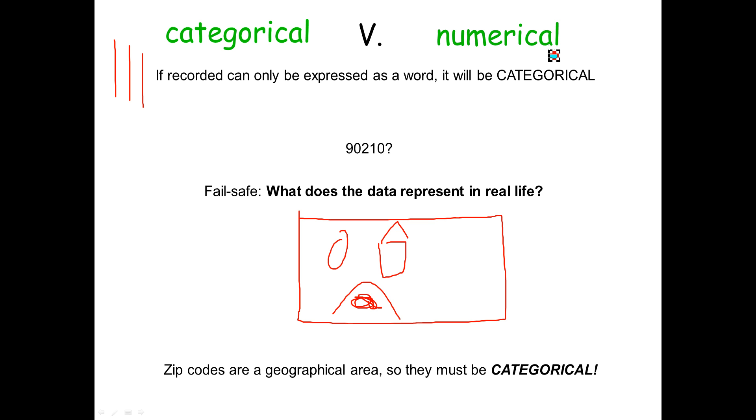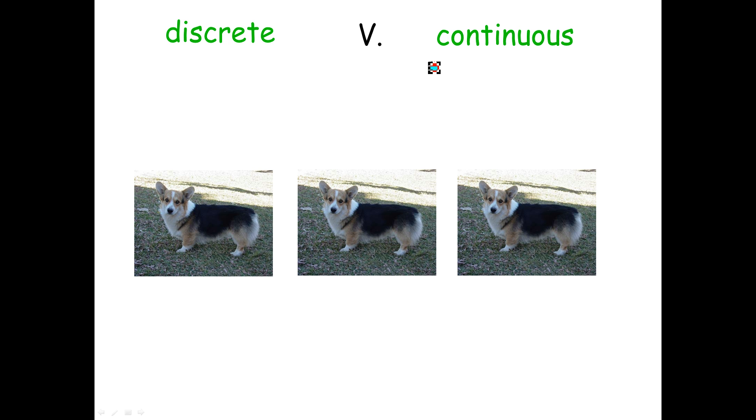Now, for numerical data, I told you about the distinction between discrete and continuous. And in order to remember this, I just want you to ask the question whether or not you can have half of a data point you're recording.